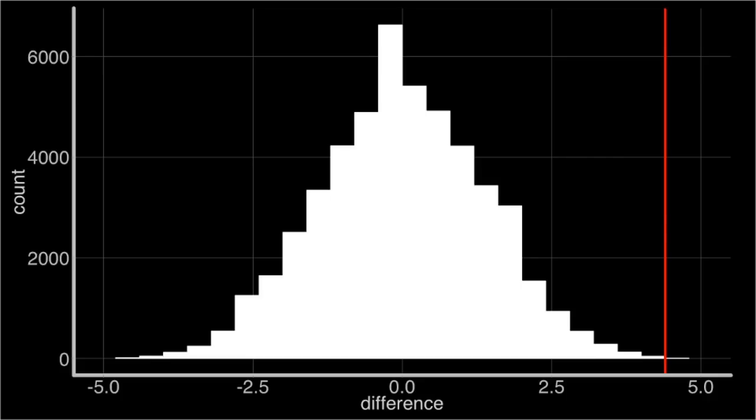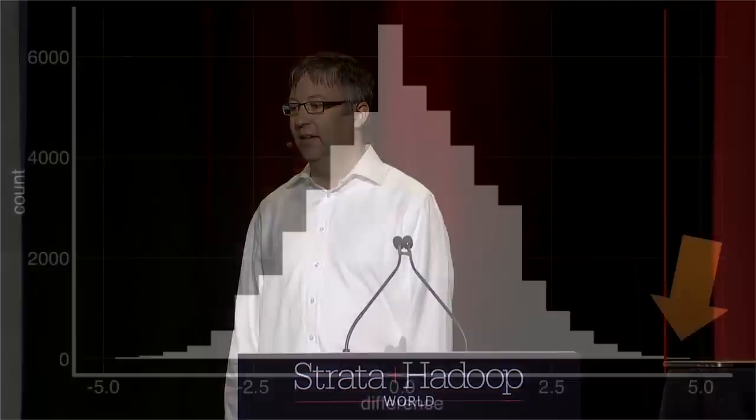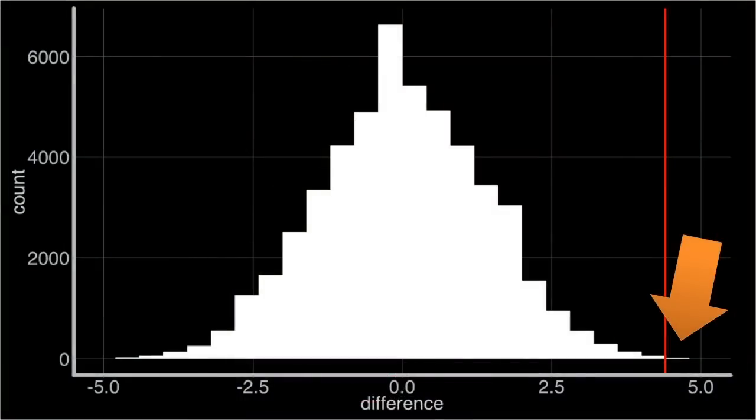Recall the skeptic's argument that there is no effect and the labels were meaningless. This data was generated under that assumption, and it shows the range of possibilities if the skeptic is right. And if the skeptic is right, a difference of 4.4 is fantastically rare — it happened just 14 times in 50,000 trials. And so, as the advocate said, the skeptic's argument strains credibility and can be safely rejected. That, of course, was the conclusion of the researchers that gathered this data in the first place.